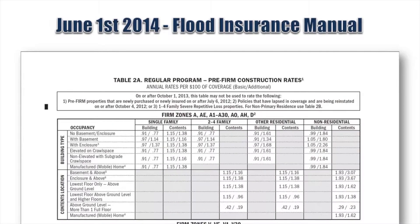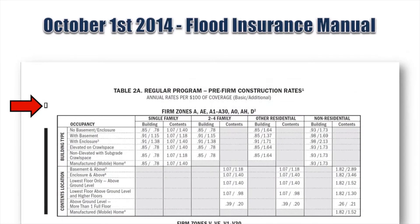This October manual also features hollow change bars. These indicate where information was previously added in accordance with the Biggert-Waters Flood Insurance Reform Act of 2012, but subsequently removed to comply with the Homeowners Flood Insurance Affordability Act of 2014.